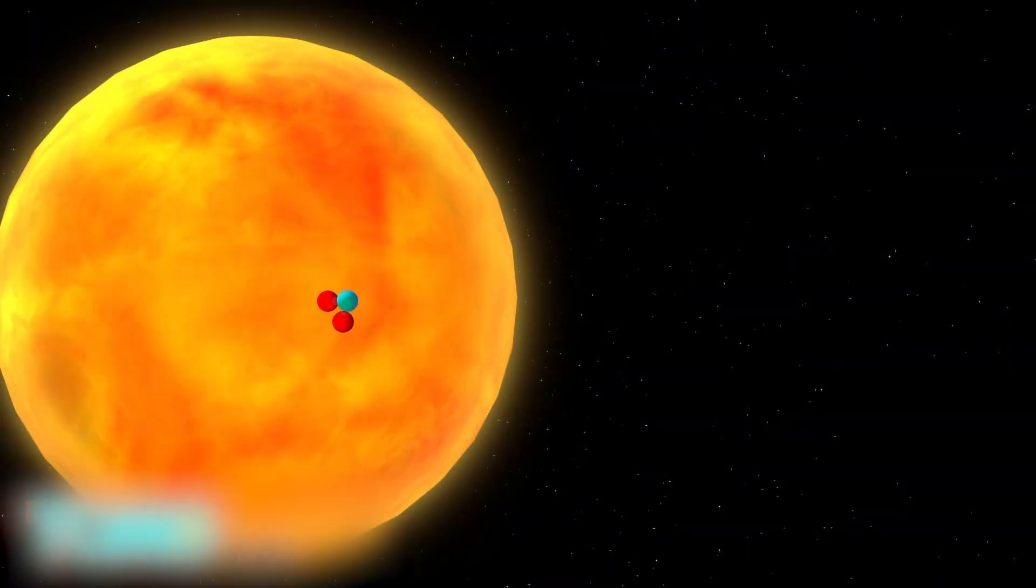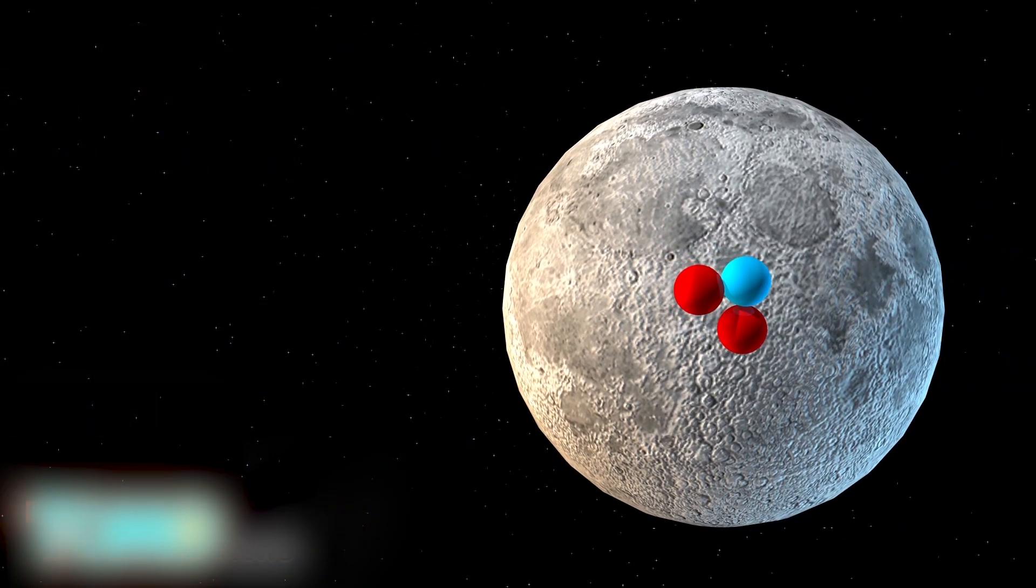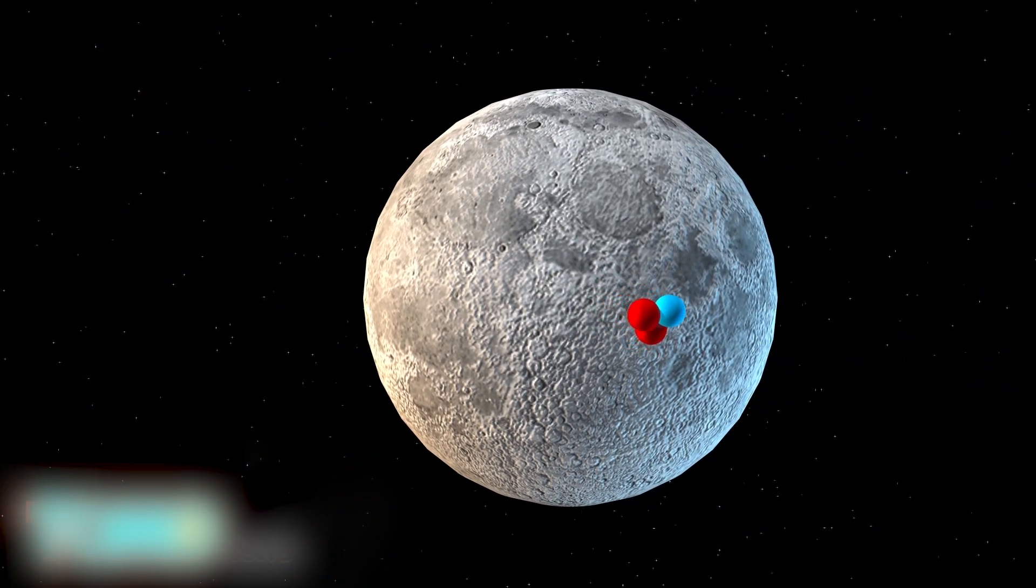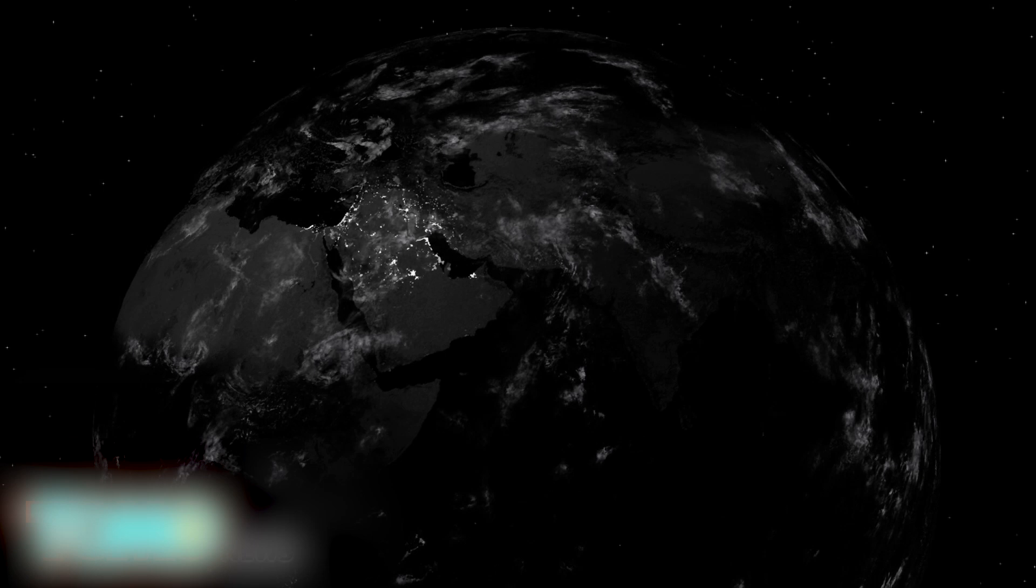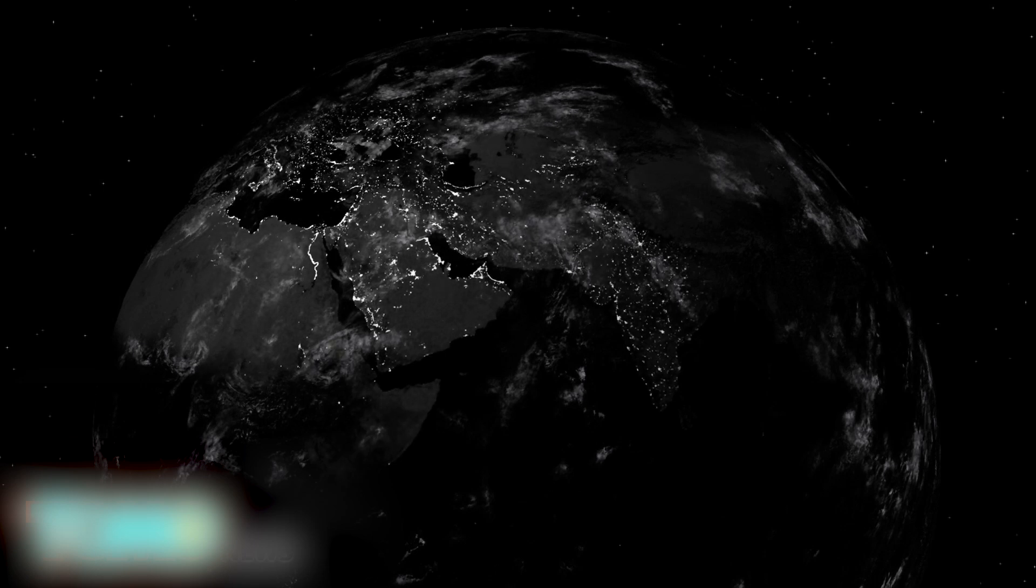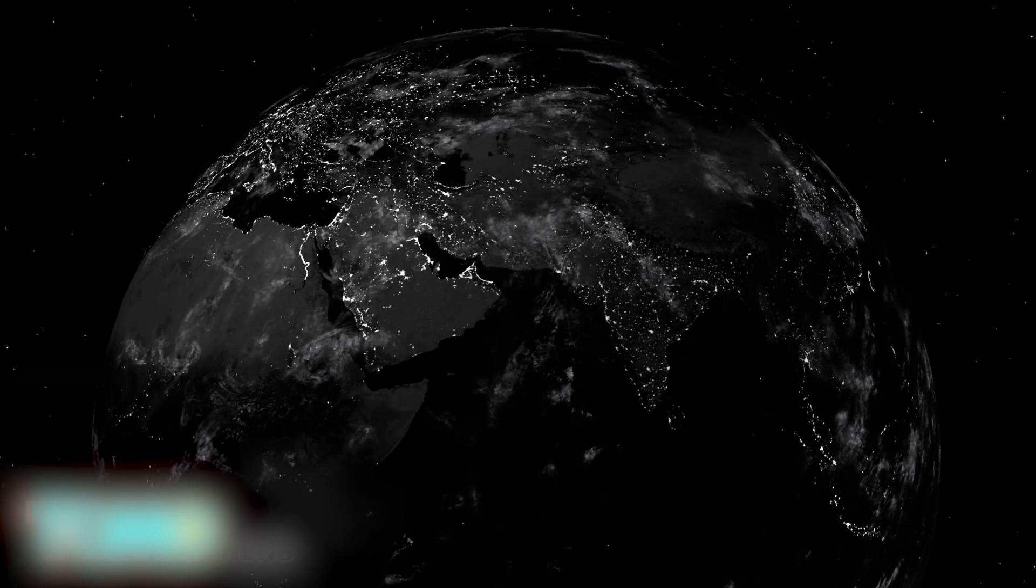Helium-3 doesn't occur naturally on Earth, but the Sun has been emitting it for billions of years, and some has accumulated on the Moon. 2.2 pounds of helium-3 combined with one and a half pounds of deuterium produces 19 megawatt years of energy. 25 tons of it could theoretically power the U.S. for an entire year.